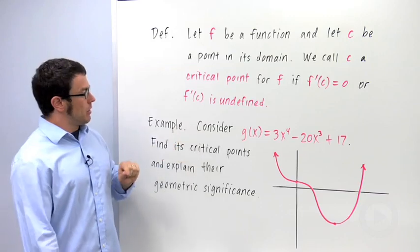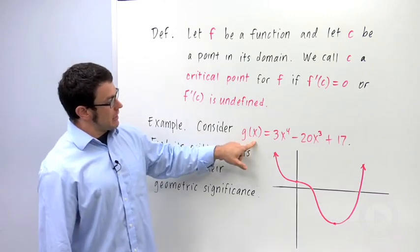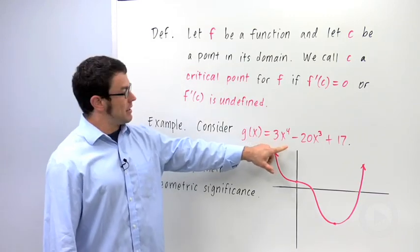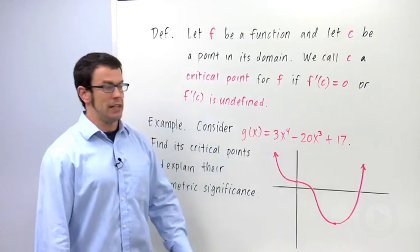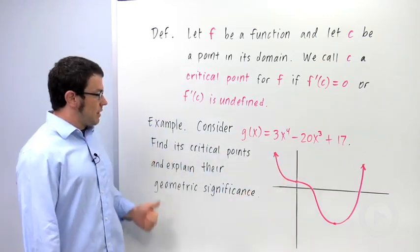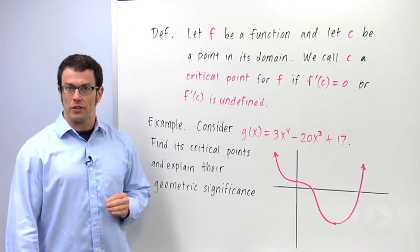Let's look at an example where we find some critical points. Consider the function g(x) = 3x^4 - 20x^3 + 17, and I have that function graphed here. I'm asked to find the critical points and explain their geometric significance.